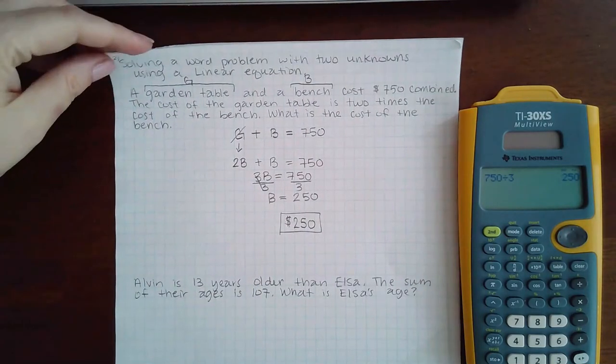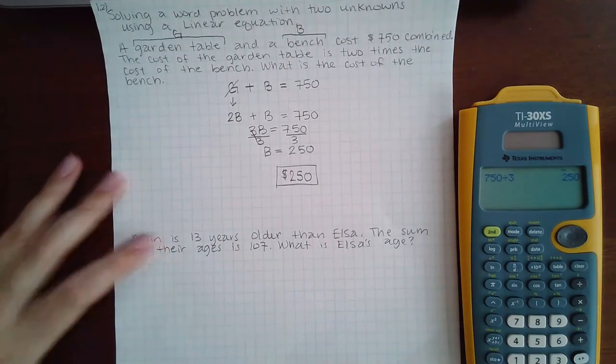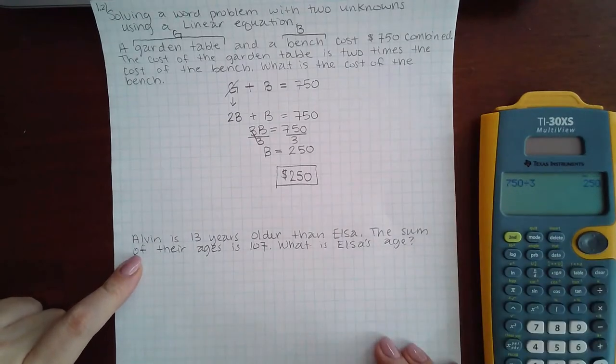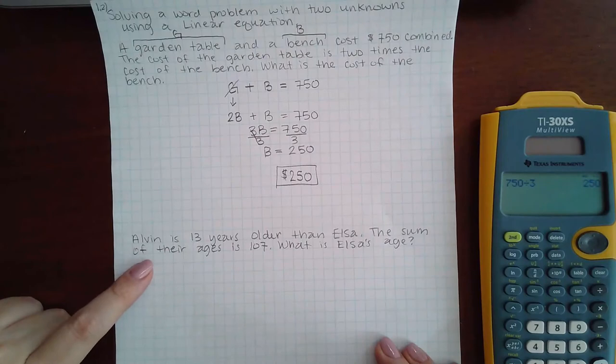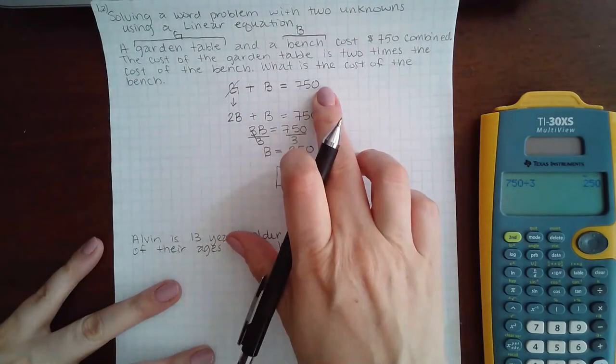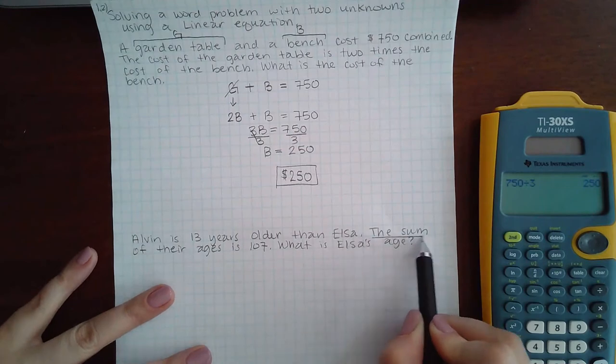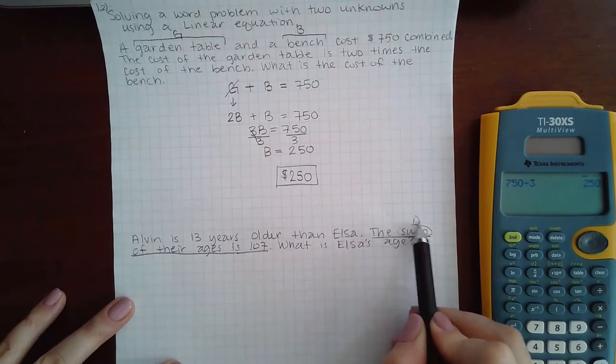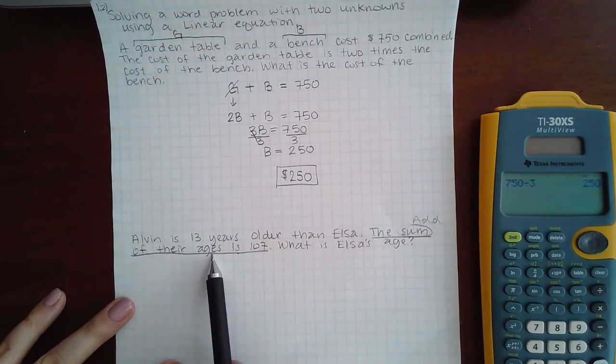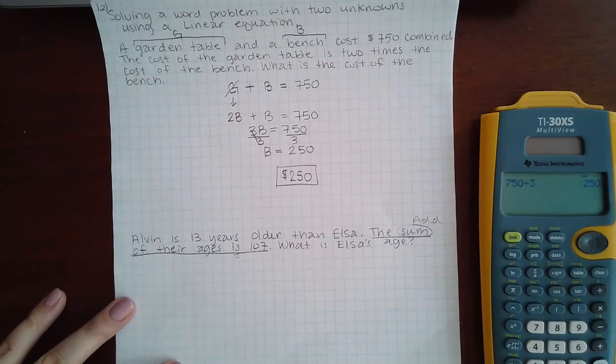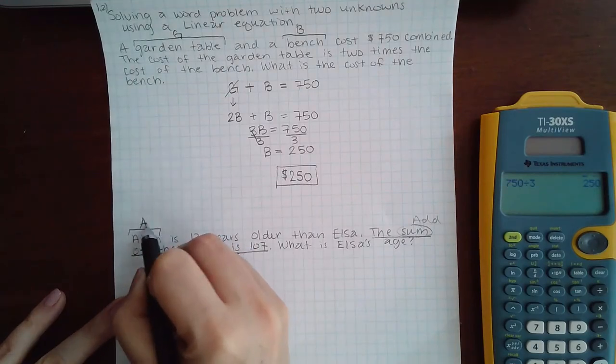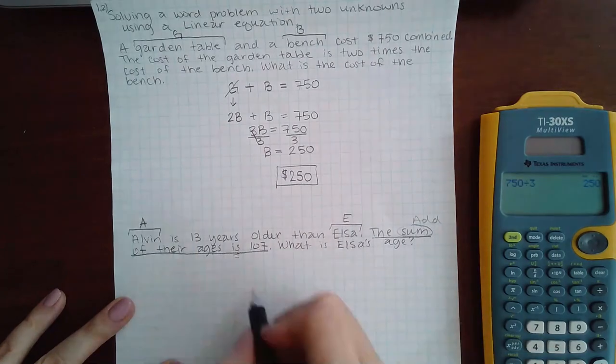Let's try another scenario that is still the same type of problem. It says Alvin is 13 years older than Elsa. The sum of their ages is 107. What is Elsa's age? I always like to start with the total equation, so I'm actually going to start with the second equation because it tells me the sum. This word means to add. When I add their ages, is is the equal sign, it should equal 107. If I take A for Alvin's age plus E for Elsa's age I should get 107.